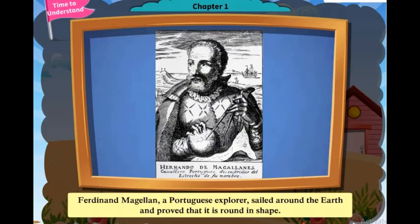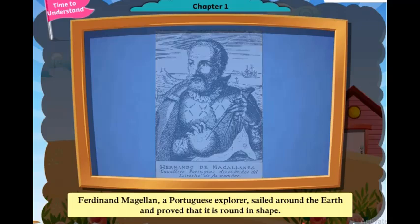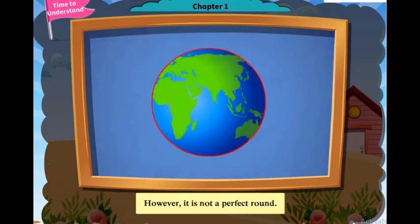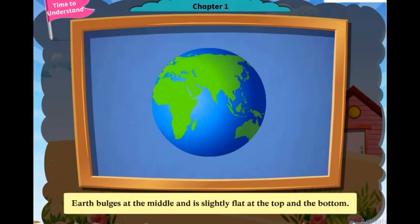Ferdinand Magellan, a Portuguese explorer, sailed around the Earth and proved that it is round in shape. However, it is not a perfect round. Earth bulges at the middle and is slightly flat at the top and the bottom.